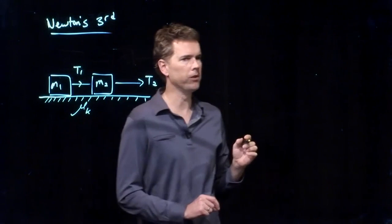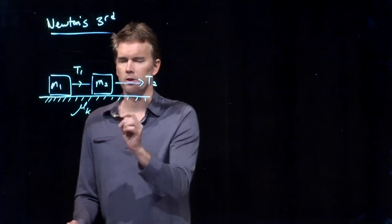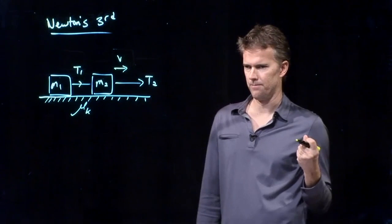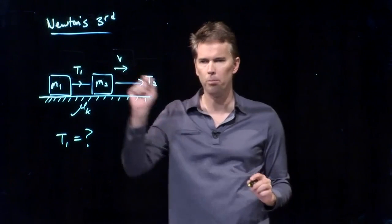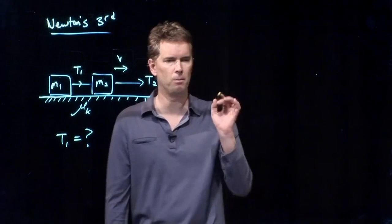This whole thing is going to slide to the right, which means we're dealing with kinetic friction and kinetic friction has a coefficient mu sub k. We're going to say the whole thing is moving to the right. So that's what our picture looks like. We're going to ask the question, what is the tension in the rope between the two masses?